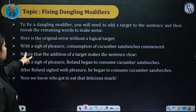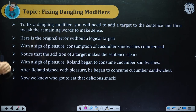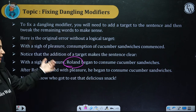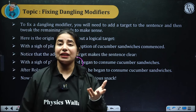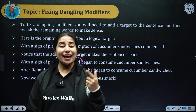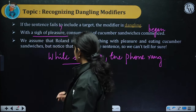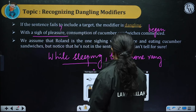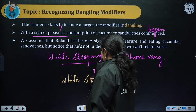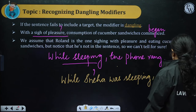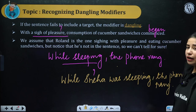So how do you fix this error? Introduce the target. The original sentence 'With a sigh of pleasure, consumption of cucumber sandwich commenced' can be rectified as: 'With a sigh of pleasure, Roland began to consume cucumber sandwiches.' You introduce a subject — Roland, or Juhi, or yourself — who was sighing with pleasure. Similarly, 'While sleeping, the phone rang' is corrected as: 'Whilst Neha was sleeping, the phone rang.' You introduce a subject so we know who was sleeping. In the answer choices, a new subject will be introduced that becomes the modifier's target, giving the sentence clarity and rectifying the error.